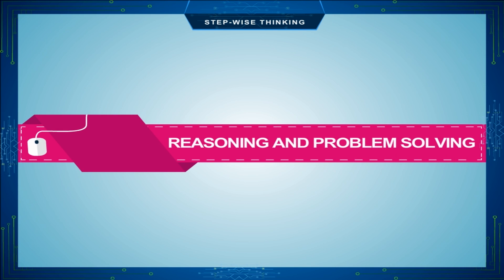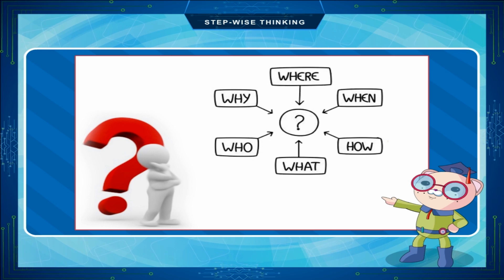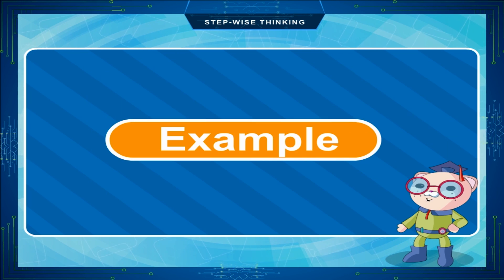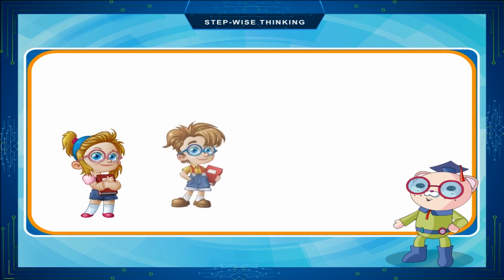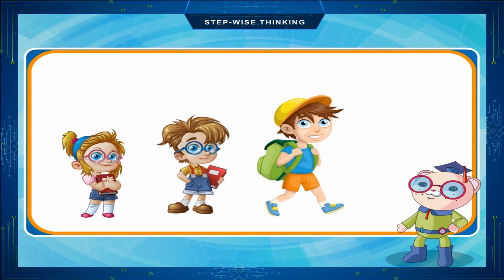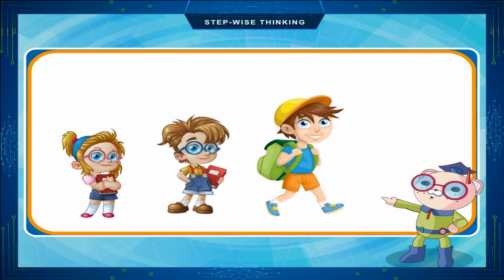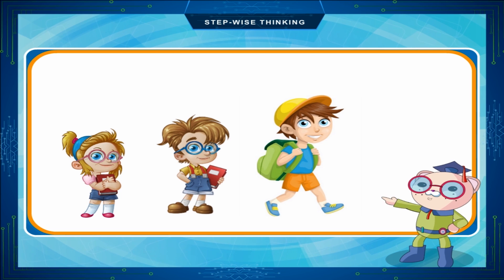Reasoning and problem solving are the main thinking work. In this work, we compare things with given conditions. For example, if someone asks that Seijin is 7 years, Nippun is 9 years, and Karan is 12 years, then who is the younger one? We compare the data and find the result. This kind of problem solving needs us to analyze the task, break it up into small steps, and then find the solution.